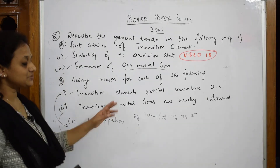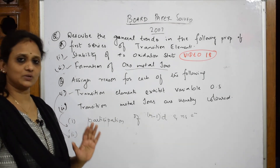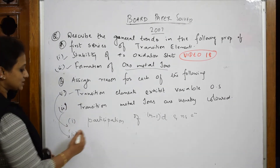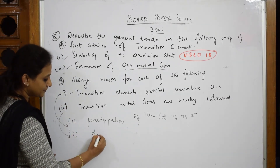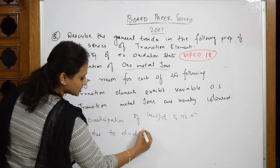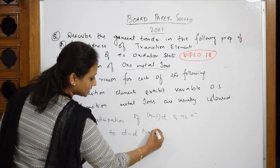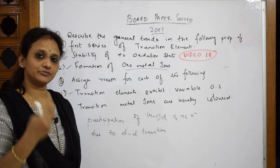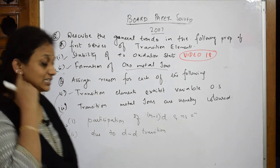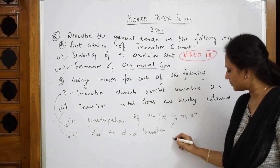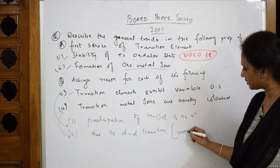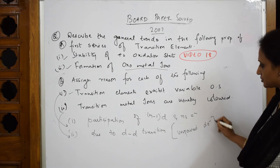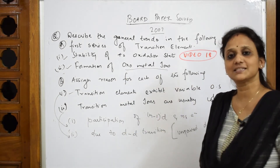Why are transition metal atoms colored? When they ask you this color concept, write one keyword — I have already shown you in the video. The color is due to d-d transition. This is what the examiner expects you to write. It involves the shift of electrons from the T2G set to the EG set. Why is this d-d transition observed? Because of unpaired d electrons, it shows d-d transition.